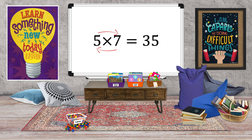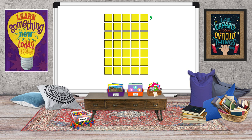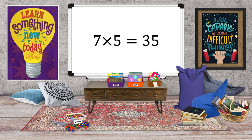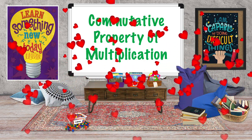Now let's flip the factors: seven times five equals blank. Seven rows, five columns. Here's our array. Skip count: five, ten, fifteen, twenty, twenty-five, thirty, thirty-five. Seven times five equals thirty-five. We've demonstrated the commutative property of multiplication again!